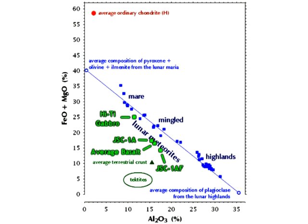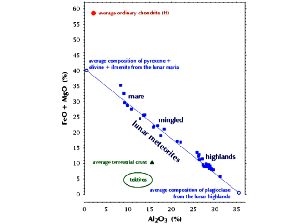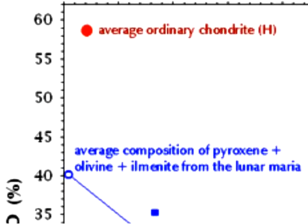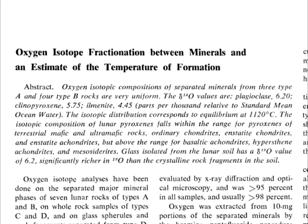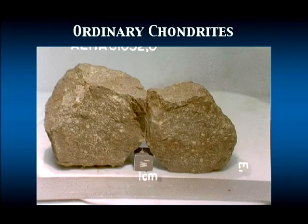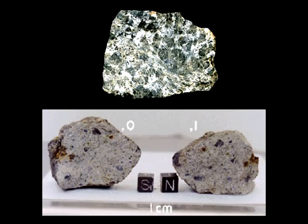Secondly, the only non-terrestrial material that Korotev compares lunar meteorites to are chondrites. Other than one paper which stated that ordinary chondrites have oxygen isotope ratios within the same range as Apollo samples, all sources I've read seem to agree that chondrites are absolutely nothing like Apollo samples as far as compositions are concerned. But there are various other non-lunar meteorites that do seem to match up to those samples.